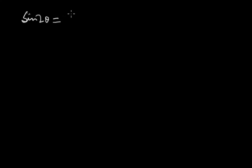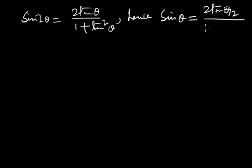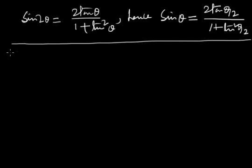Again, as sin 2θ equals 2 tan θ by 1 plus tan²θ, hence in sub-multiple angles sin θ equals 2 tan(θ/2) by 1 plus tan²(θ/2). These are the standard formulas in sub-multiple angles.